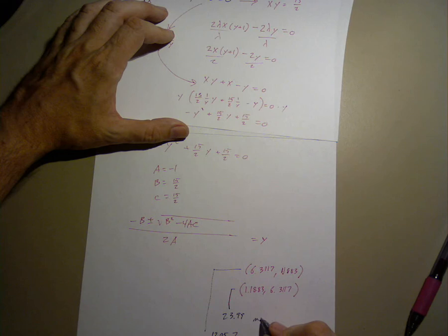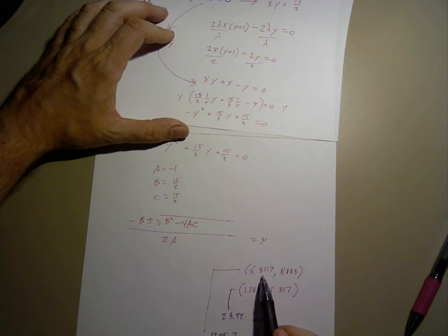Clearly, this is the first one, the 1.18, 6.31 is the minima. And the 6.31, 1.18 is the maxima.